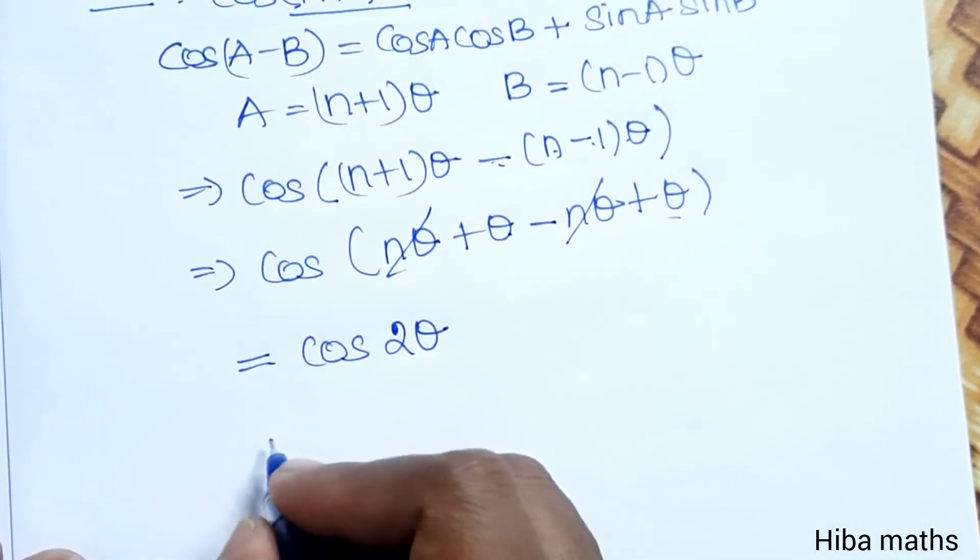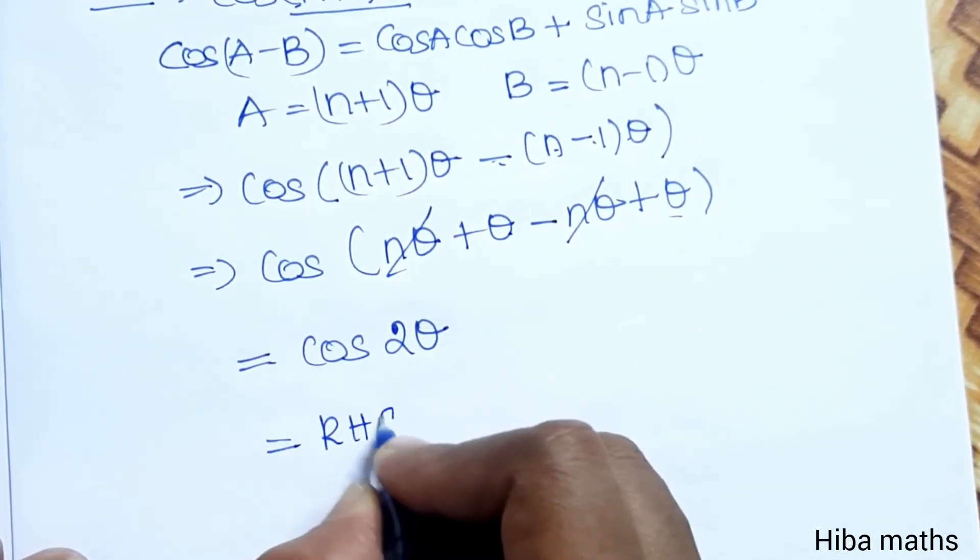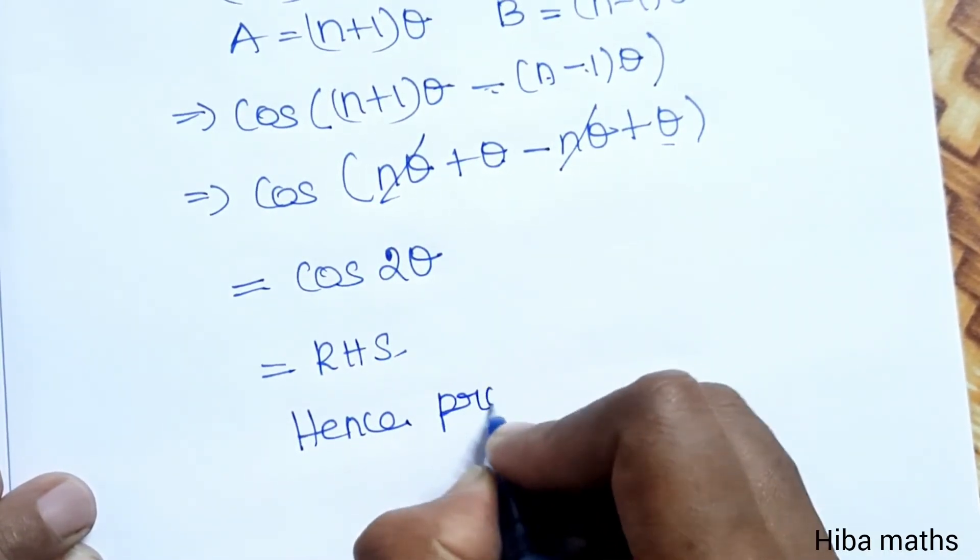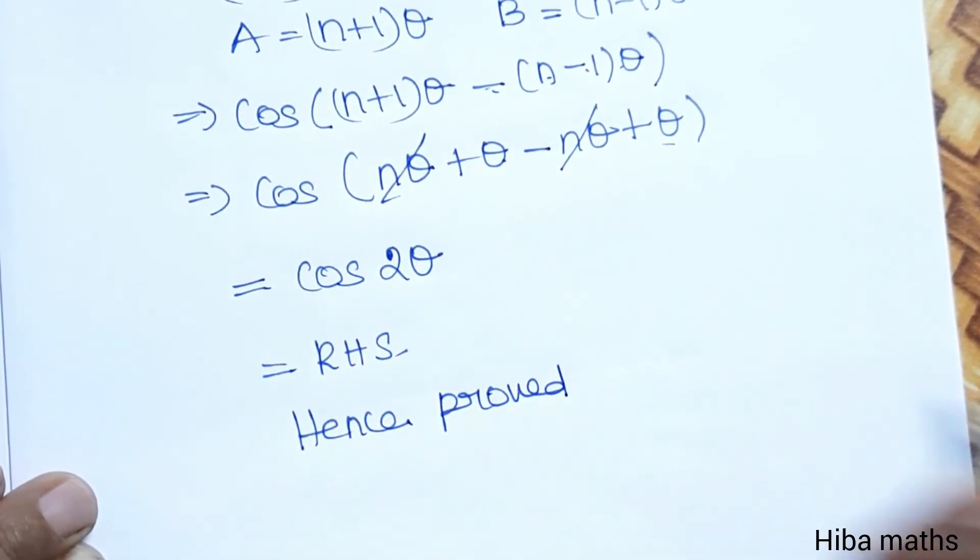cos 2θ, which is why we have the RHS. Very easy proof, hence proved. If you have any doubt, please ask in the comment section. Thank you so much for watching.